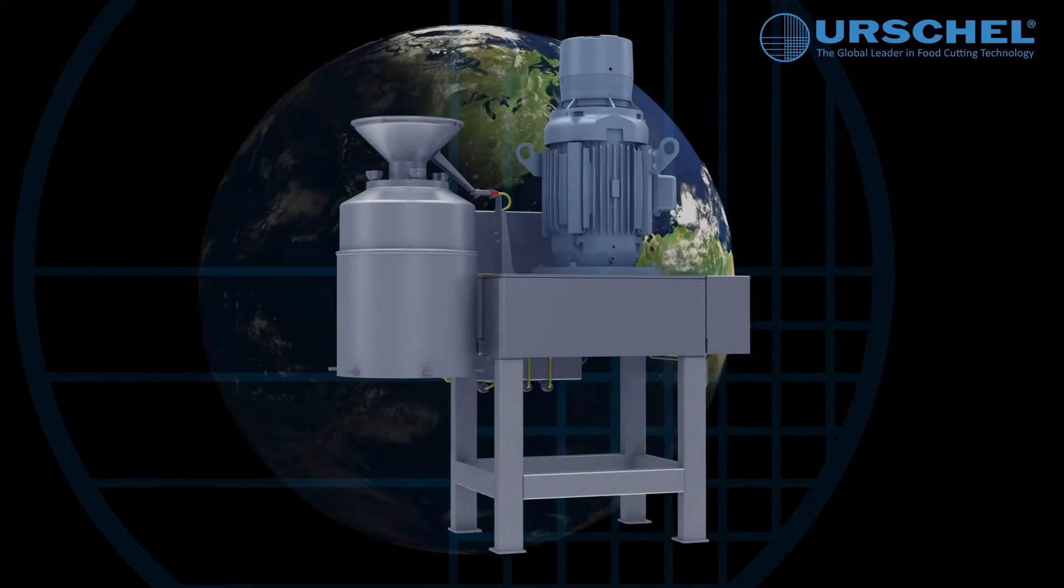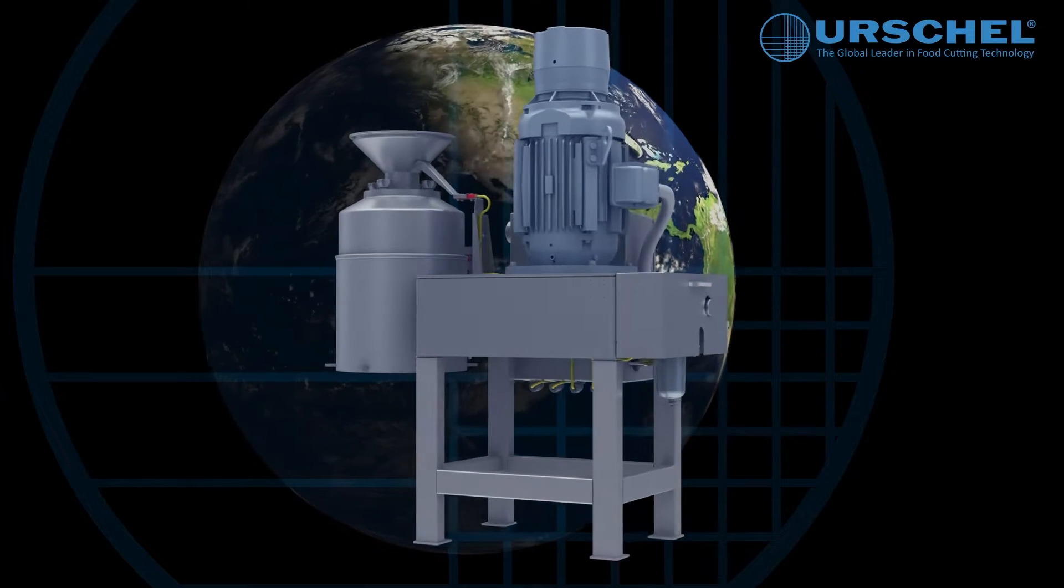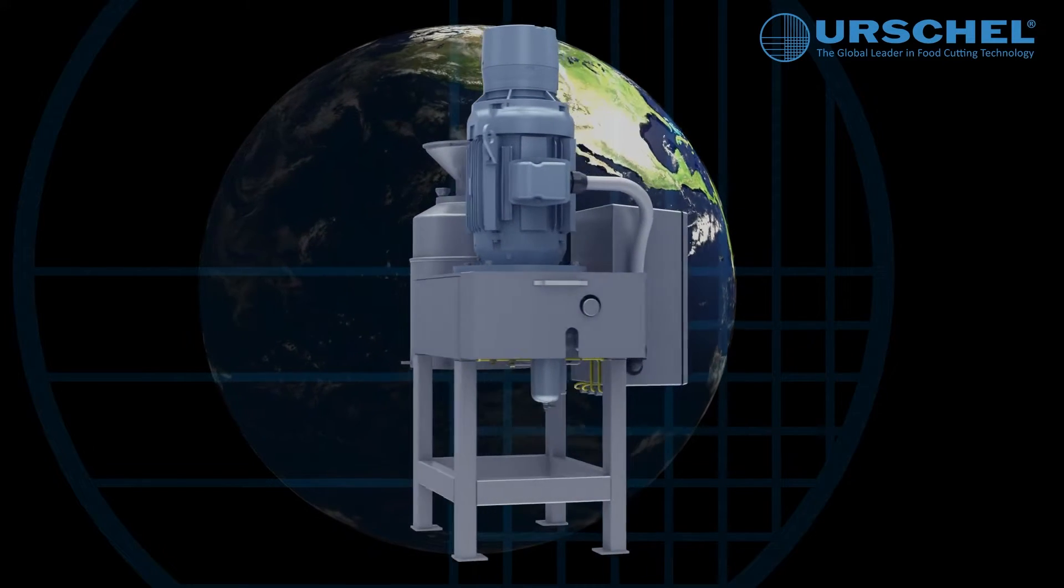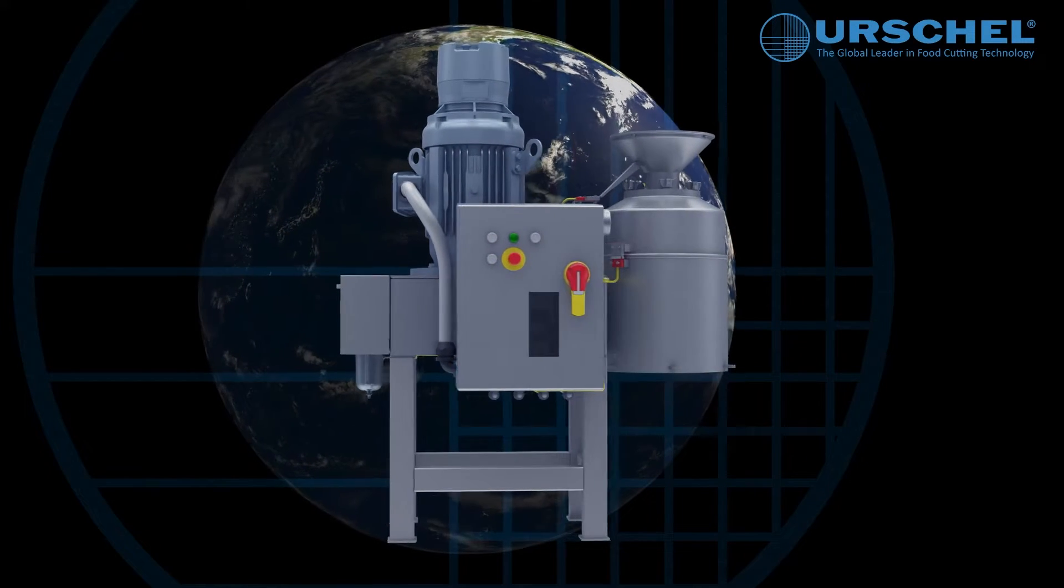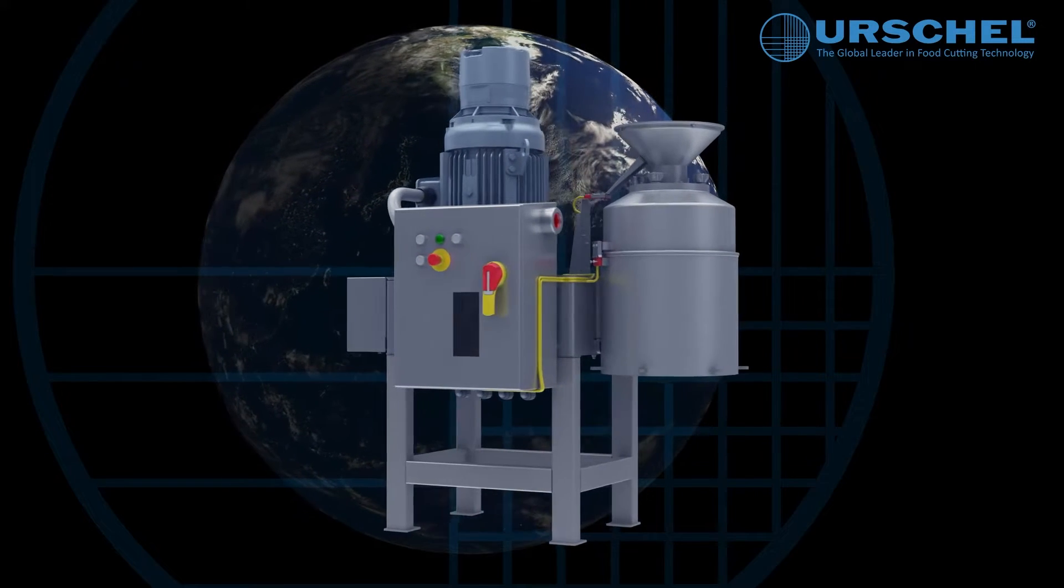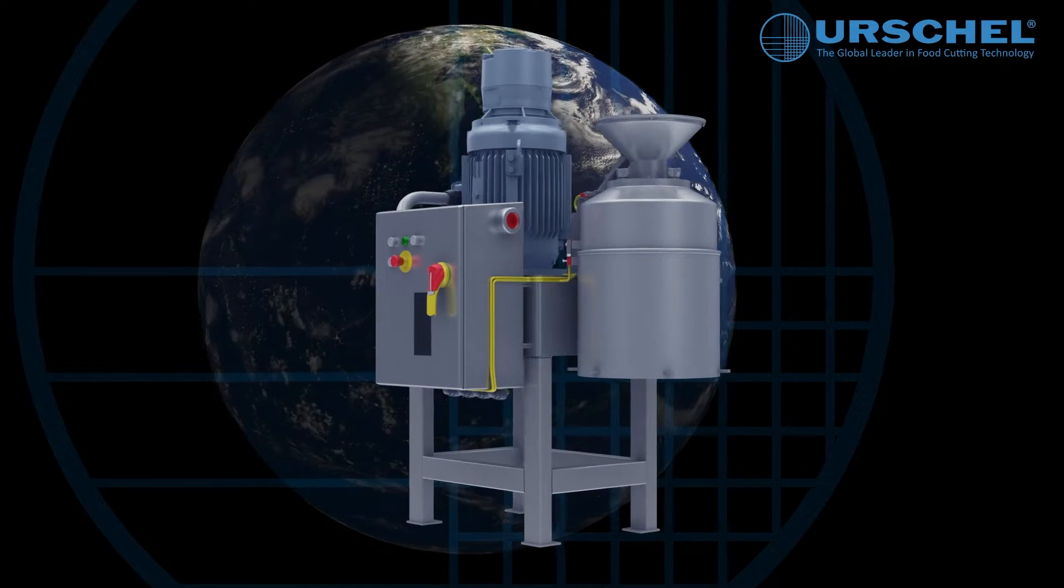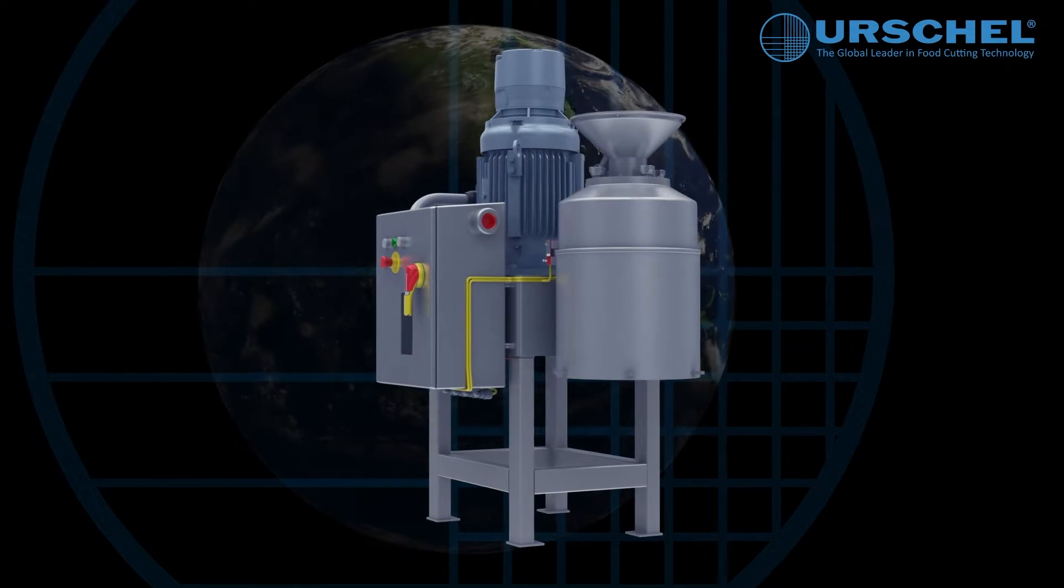Around the world, beverage, bakery, snack, confectionery, fruit, vegetable, dairy, meat, poultry, fish, chemical, and pharmaceutical industries have relied upon the Commitrol Processor Model 1700 to maximize their productivity and efficiency.